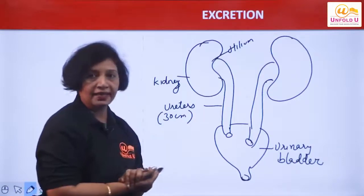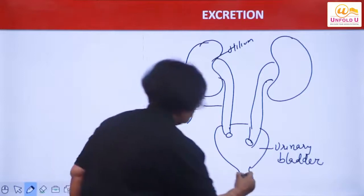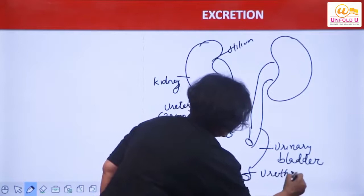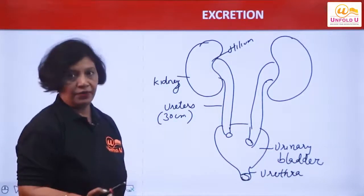And they enter into this sack-like structure, which is called the urinary bladder. Then the urinary bladder further opens out through a small opening which is called the urethra.